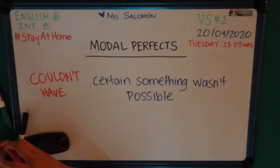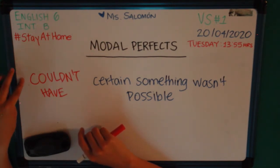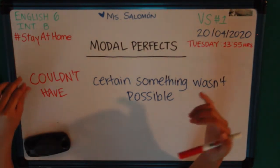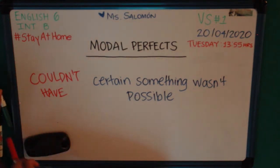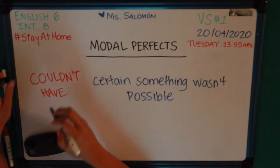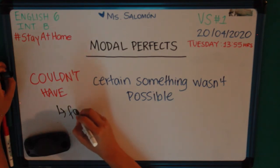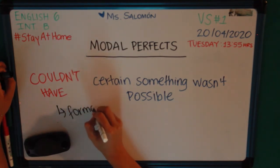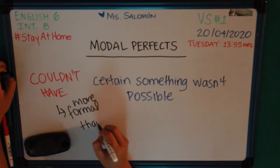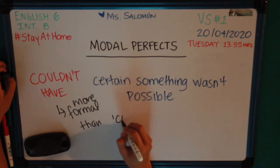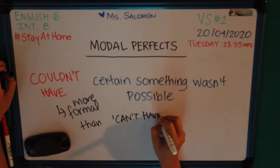We use the modal perfect 'couldn't have' to express the same thing as 'can't have,' except that we use 'couldn't have' as a more formal way of expressing it. It's more formal than 'can't have,' but we use it to express the same thing.